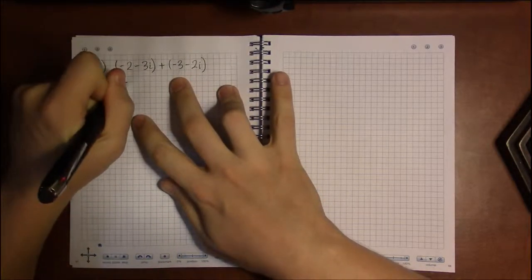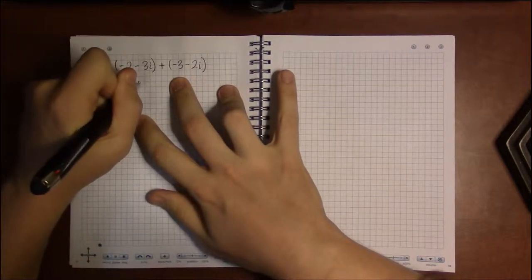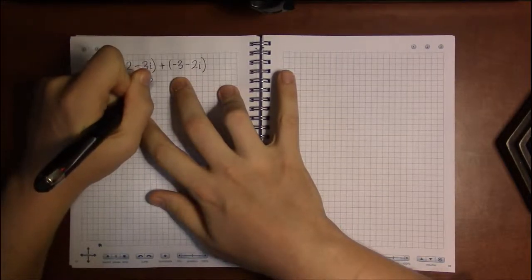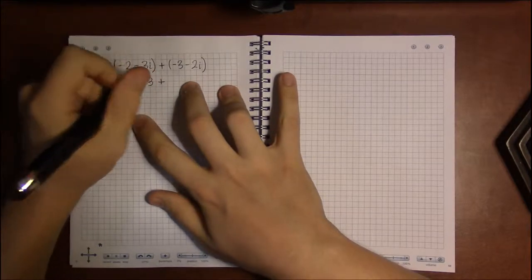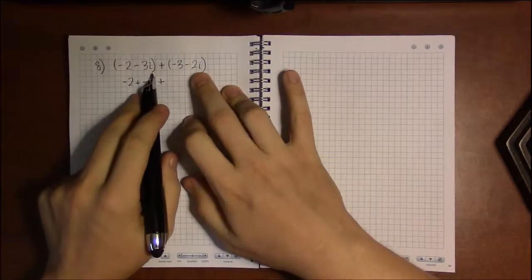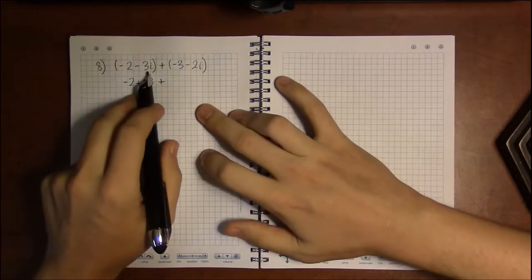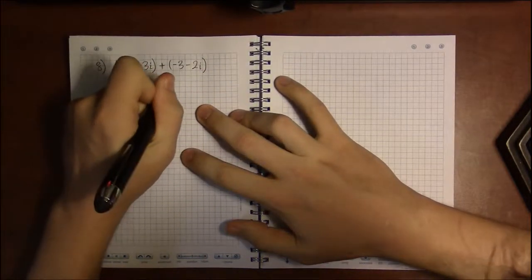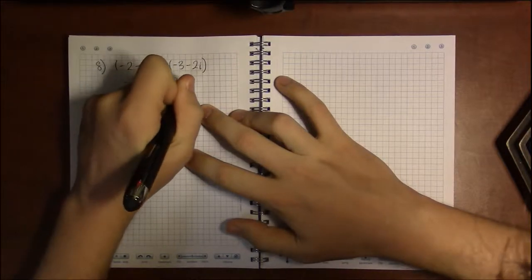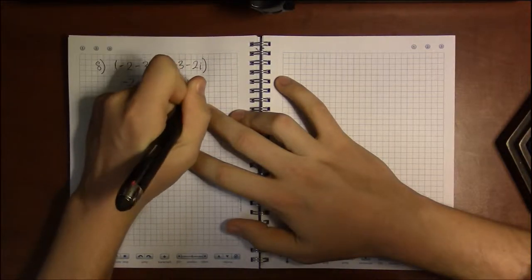So we're going to add minus 2 together with minus 3, and then the other like terms are the things with the i's. That's going to be minus 3i plus a minus 2i.